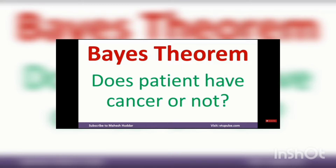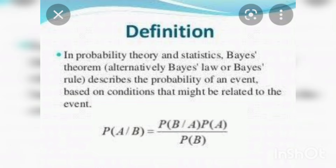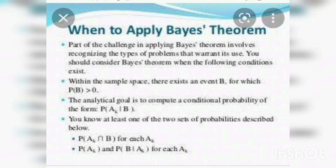Not only cancer, it will detect many medical tests. By the definition of Bayes' theorem, in the probability theory and statistics, Bayes' theorem or Bayes' law or Bayes' rule describes the probability of an event based on conditions that might be related to the event. For example, P of A given B.